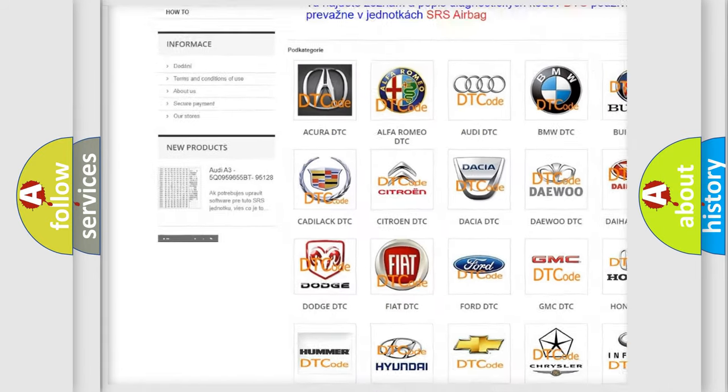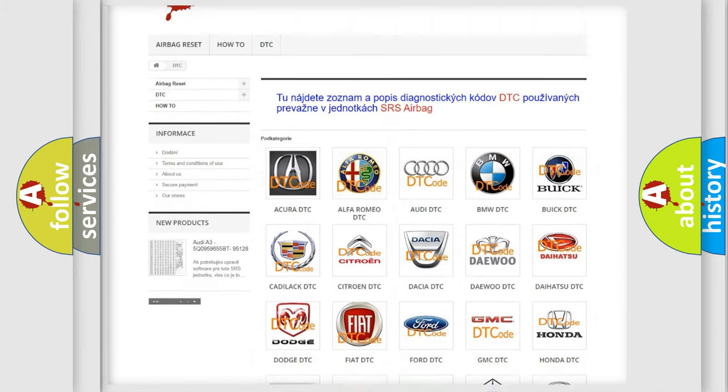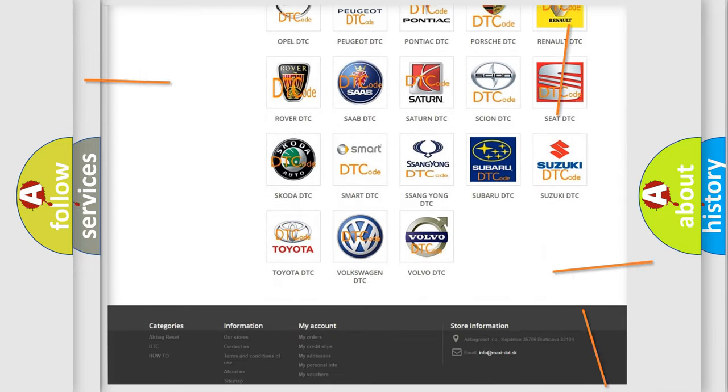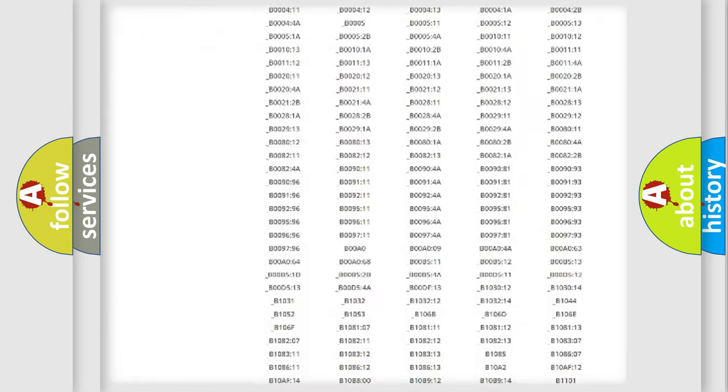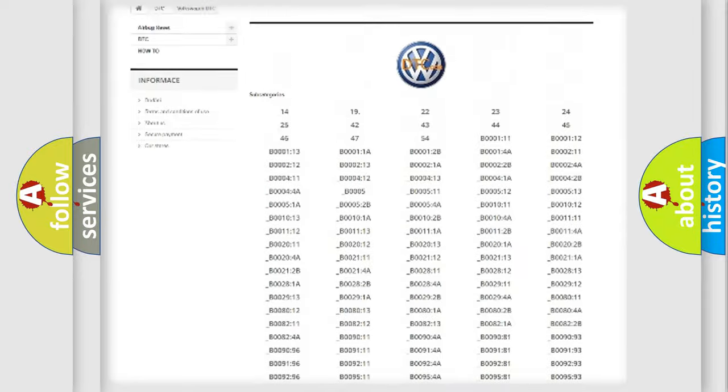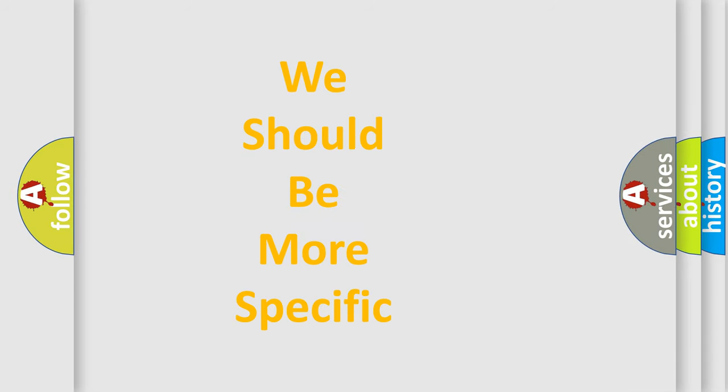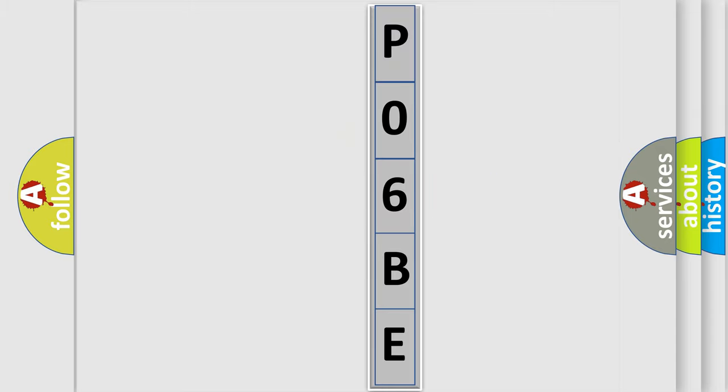Our website airbagreset.sk produces useful videos for you. You do not have to go through the OBD2 protocol anymore to know how to troubleshoot any car breakdown. You will find all the diagnostic codes that can be diagnosed in Volkswagen vehicles, and many other useful things. The following demonstration will help you look into the world of software for car control units.